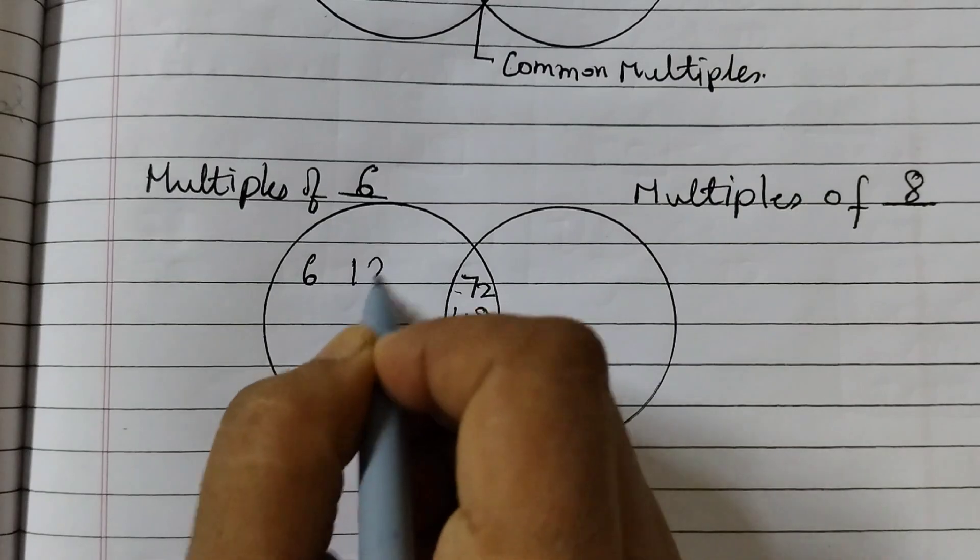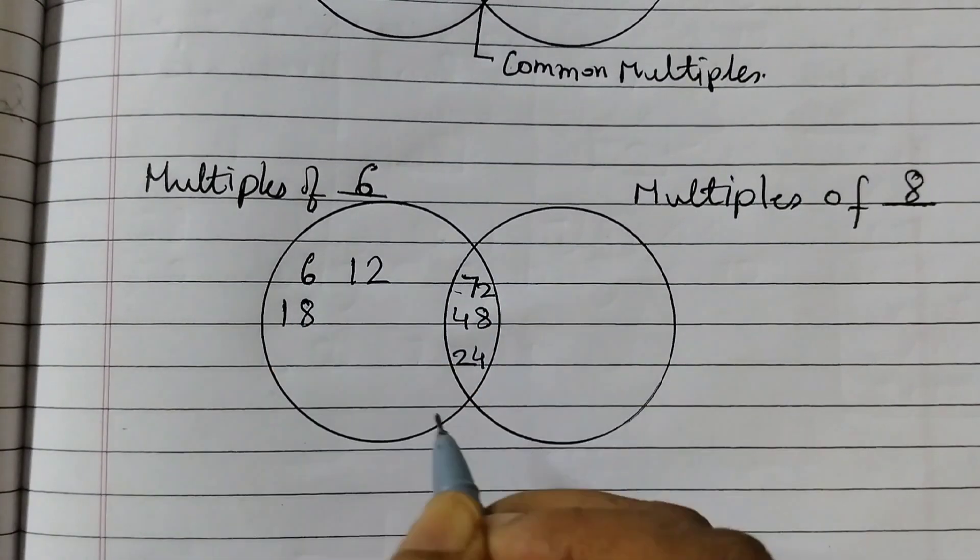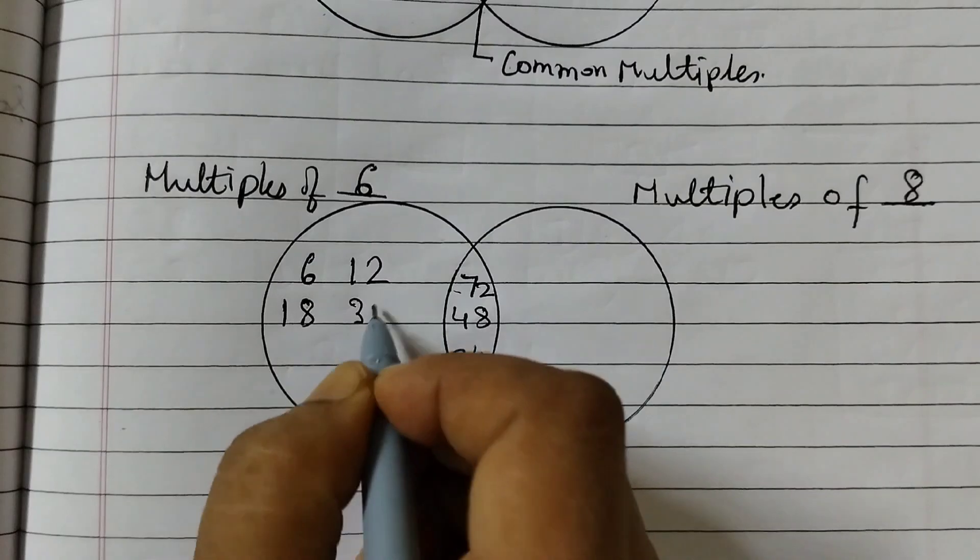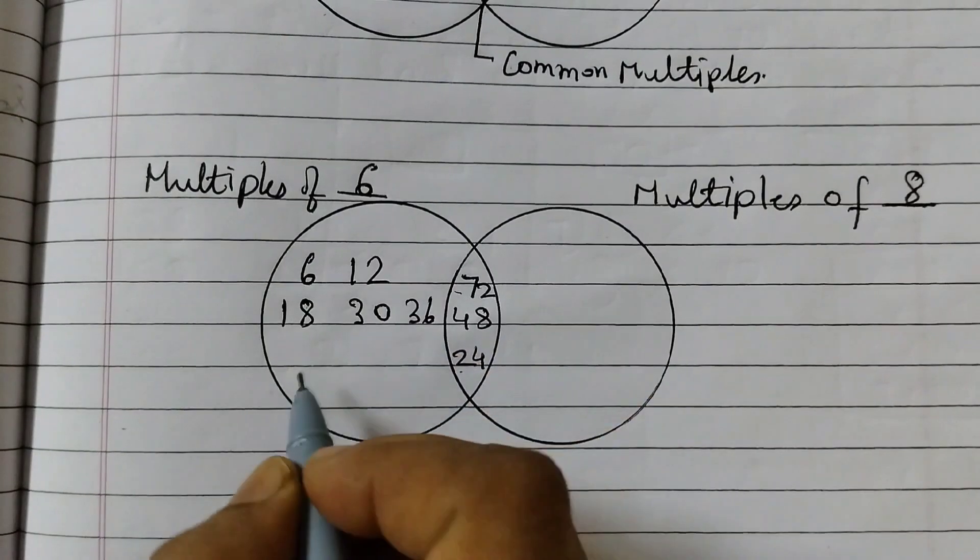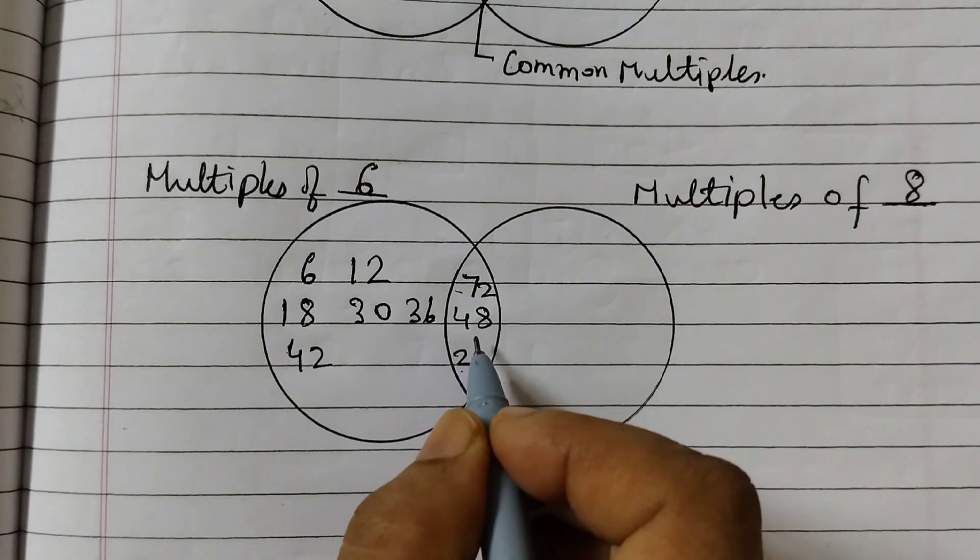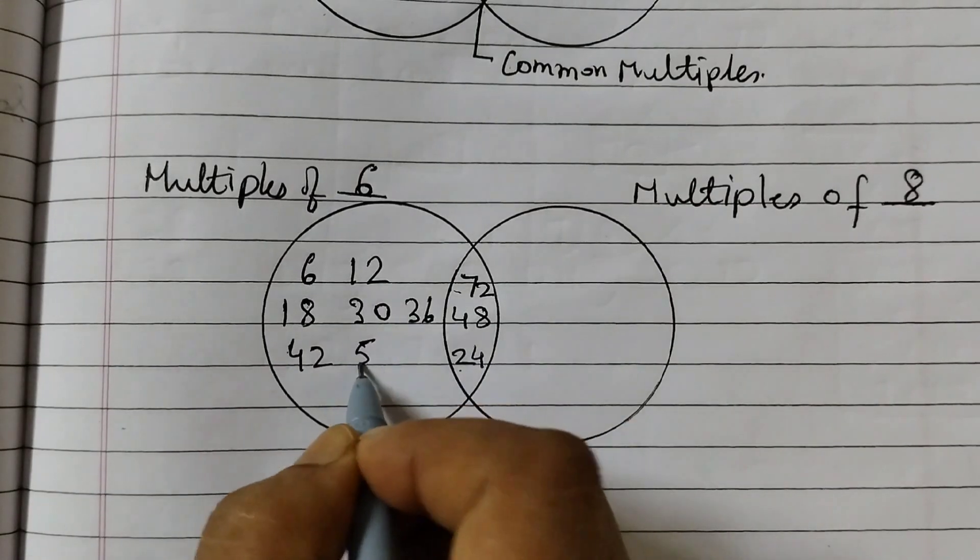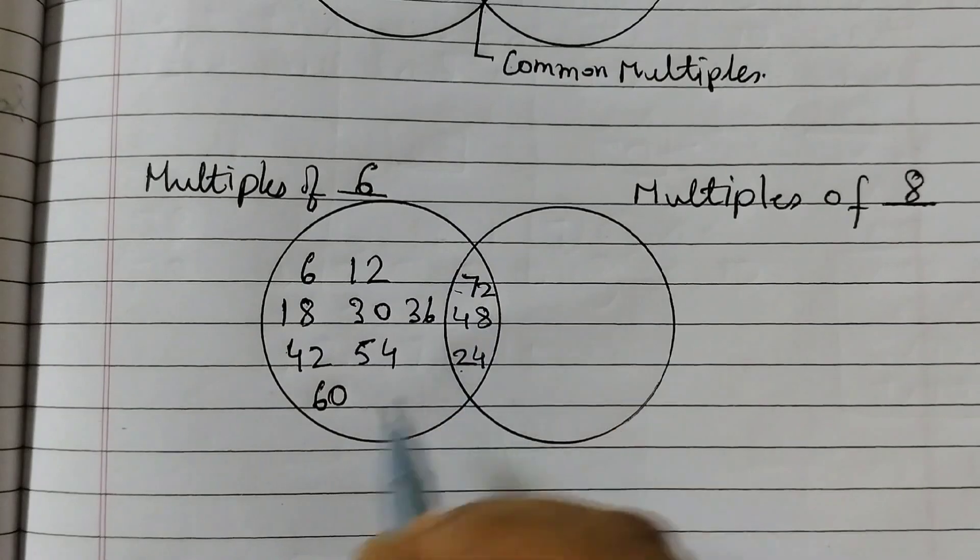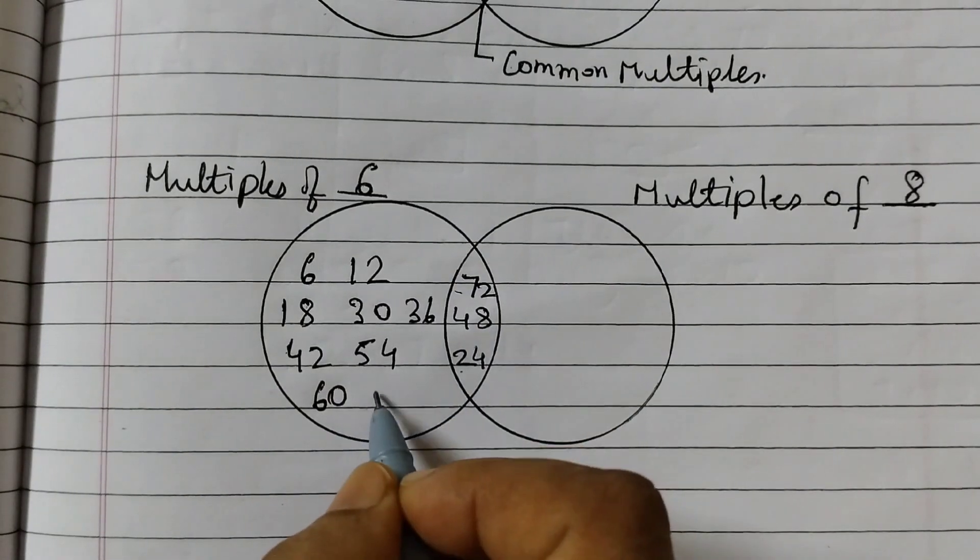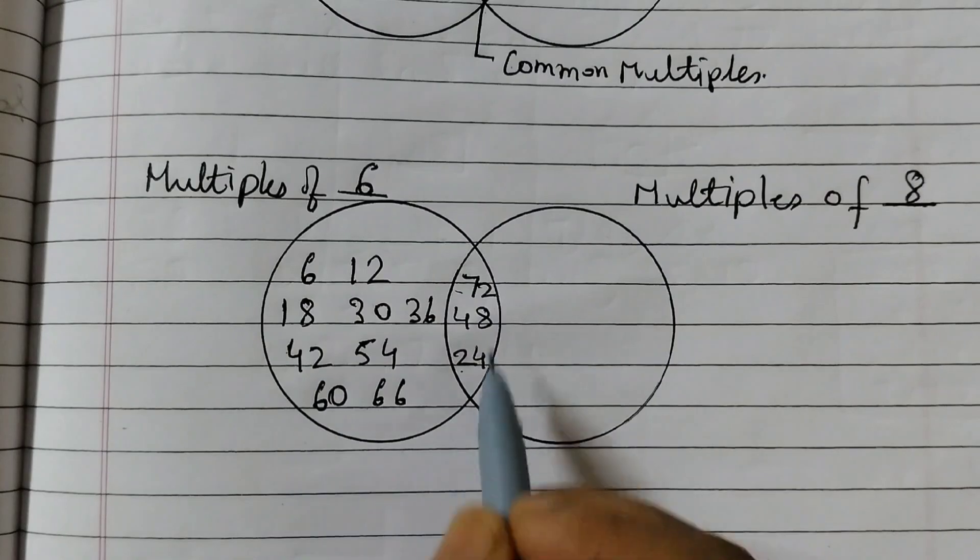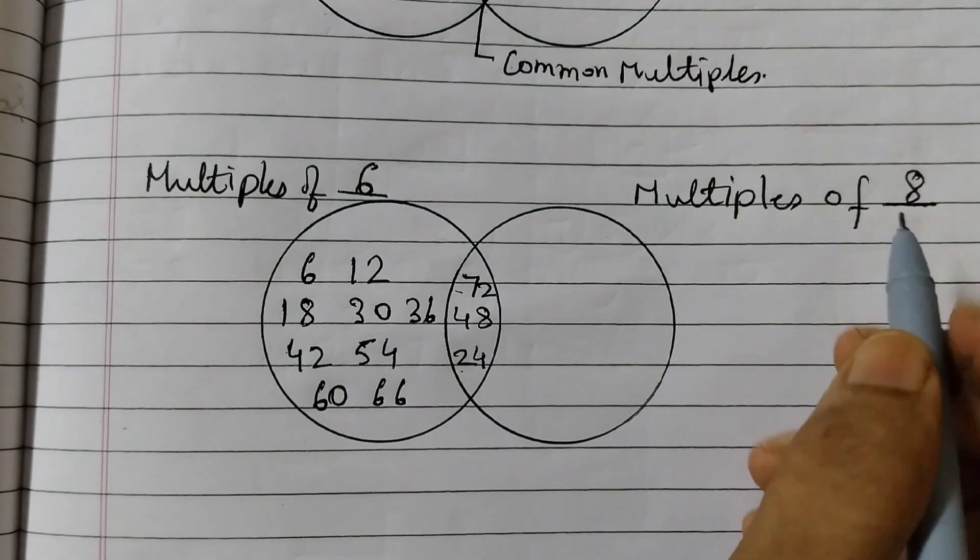6 ones are 6, 6 twos are 12, 6 threes are 18, 6 fours are 24 given already, 6 fives are 30, 6 sixes are 36, 6 sevens are 42, 6 eights are 48 given here, 6 nines are 54, 6 tens are 60. Since 72 is there, we are going to extend that. 6 elevens are 66, 6 twelves are 72, so table of 6 here.